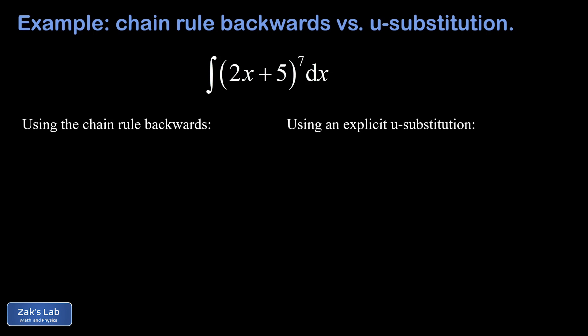In this video, we're computing the indefinite integral of 2x plus 5 to the 7th power. First, we're going to do this informally by using the chain rule backwards — just guessing the antiderivative while taking the chain rule into consideration. Then second, we'll use an explicit u-substitution to find the same answer.